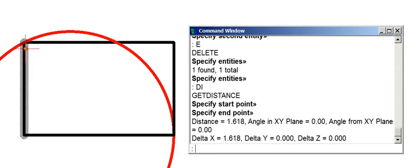So there's our ratio. We know this is 1. We already measured it. 1 to 1.618. There you go. Another way to draw a golden rectangle.